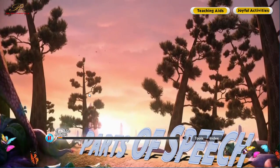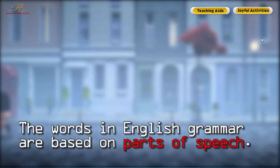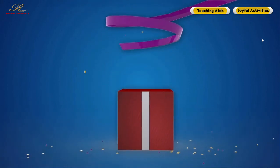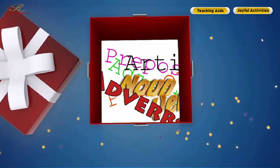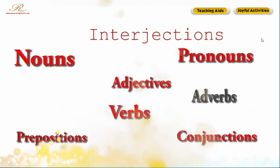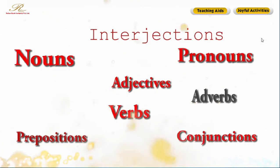Parts of Speech. The words in English grammar are based on parts of speech. There are eight main parts of speech: nouns, pronouns, adjectives, verbs, adverbs, prepositions, conjunctions, and interjections. Each part of speech explains how a word is used. It is important to know that a word can be used as more than one part of speech.